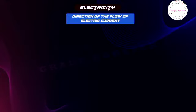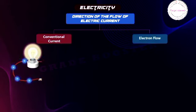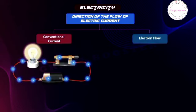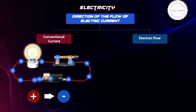The direction of the flow of electric current can be described in two ways: conventional current and electron flow. Conventional current is the direction in which positive charges would flow. By convention, it is defined as flowing from the positive terminal to the negative terminal of a power source. This convention was established before the discovery of the electron and is still used today in most circuit diagrams and descriptions.